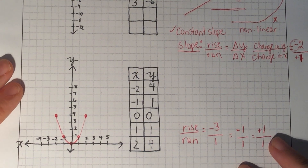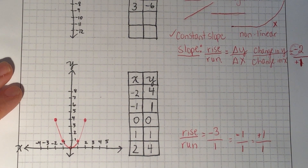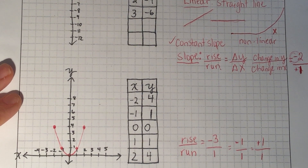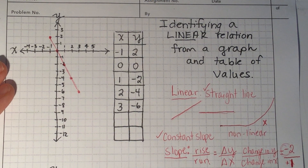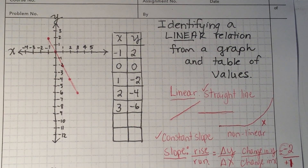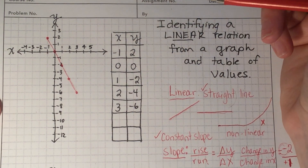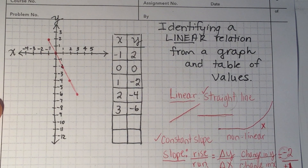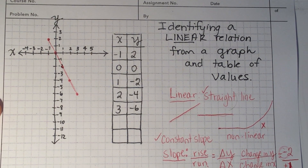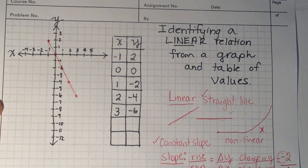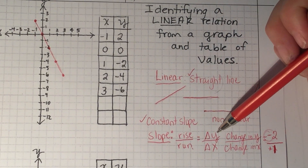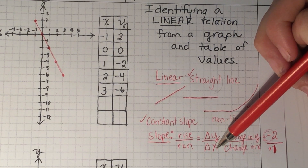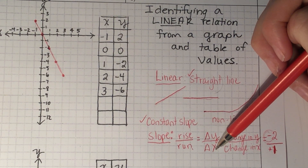Now let's look at how we determine if a graph is a linear relation from a table of values. Pretend I don't have these graphs at all and just have the table. Of course you could graph it and see, but you don't always want to stop and draw a graph, draw the axis, and number them — it takes time. You can actually tell if it is linear or not just by looking at the table of values. Remember that slope can be thought of as the change in y over the change in x, and it's a linear relation if that ratio is constant from point to point.